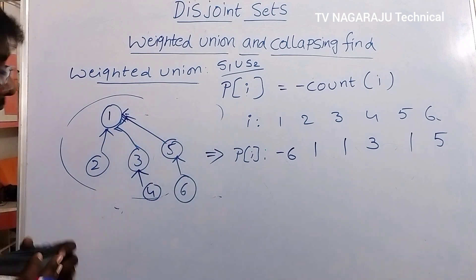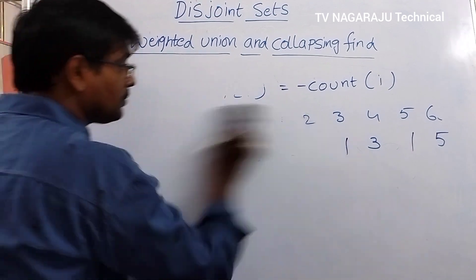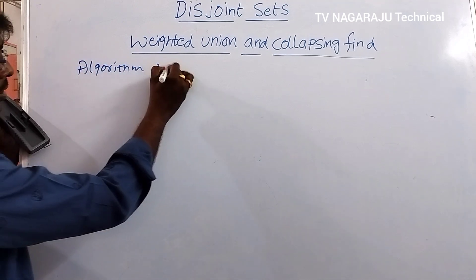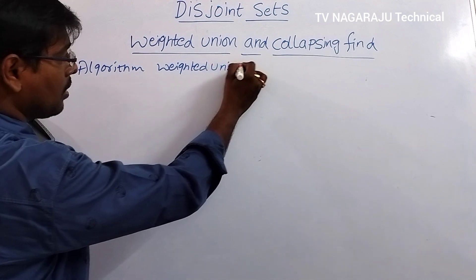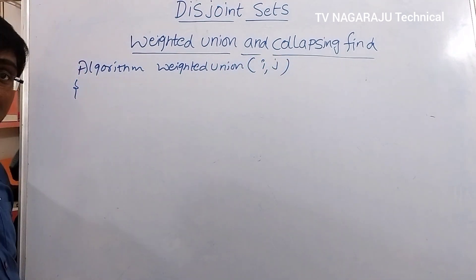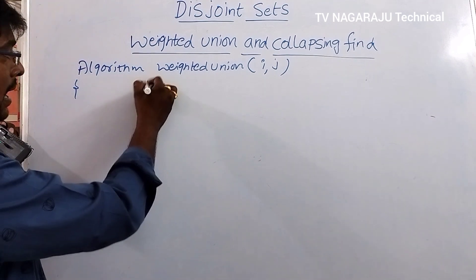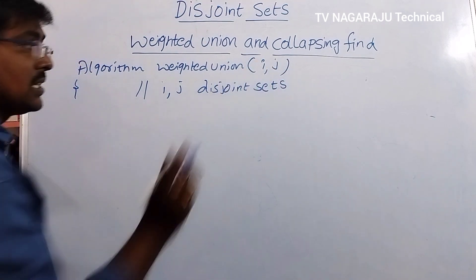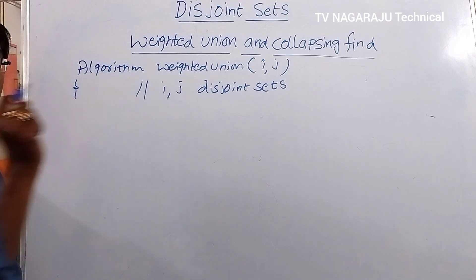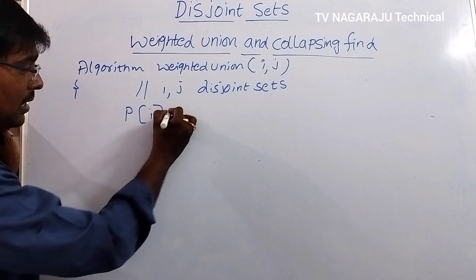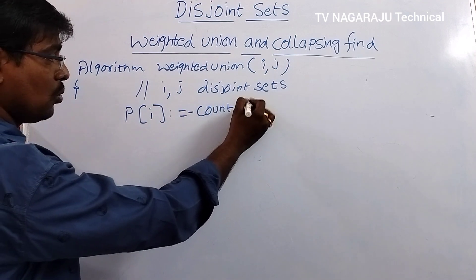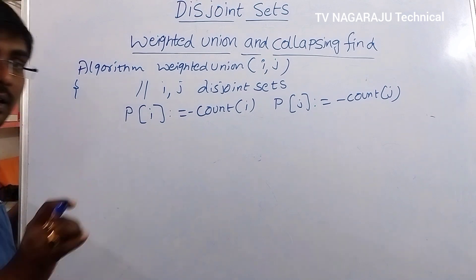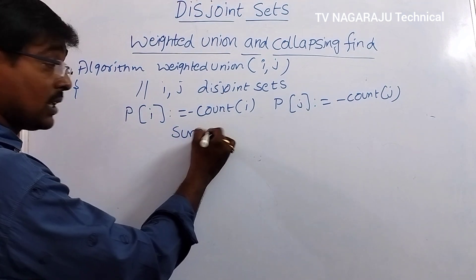Now the same thing is represented in algorithmic format. The algorithm is: weighted_union(I, J), where I is one set and J is another set — two disjoint sets. The first step is to fix the parent values for the root nodes: P(I) equals minus count(I) and P(J) equals minus count(J). Then calculate sum as count(I) plus count(J), because in the last step we update the parent of the resulting root to minus sum.